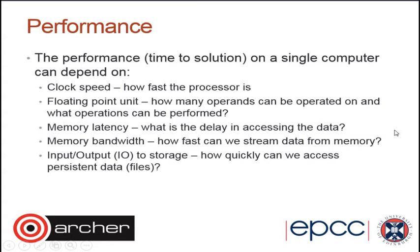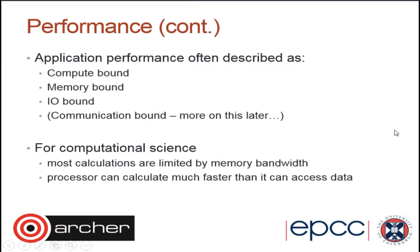Most computational science programs are limited by what we call memory bandwidth — the processor can generally process data much faster than we can load it in, and that is sort of where we sit. There are ways to address this by writing your program to efficiently use the cache. If you are developing your own software and interested in these performance issues, we do run courses which look in much more detail at hardware performance and how to write programs more efficiently — single-node optimization courses where you can take a program and make it more efficient by changing some of the ways that you program.